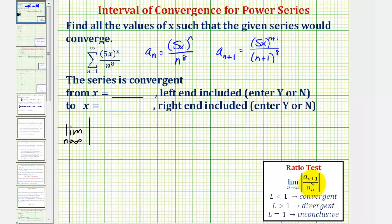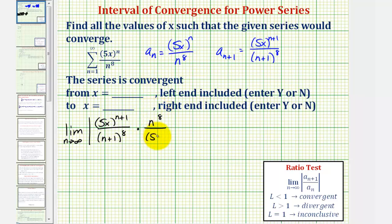Instead of dividing by a sub n, we'll multiply by the reciprocal instead. So a sub n plus one is five x raised to the power of n plus one divided by the quantity n plus one to the eighth, times the reciprocal of a sub n, which would be n to the eighth divided by five x to the nth. Notice we have n plus one factors of five x in the numerator and only n factors in the denominator — one more factor of five x in the numerator — so this simplifies to just one factor of five x.